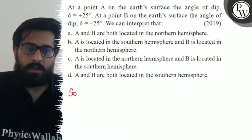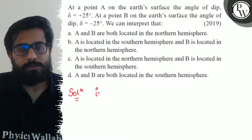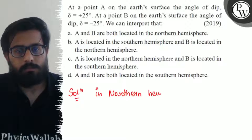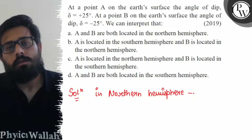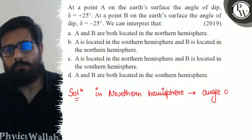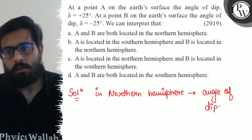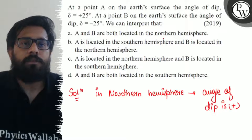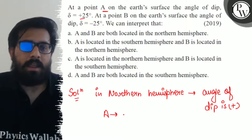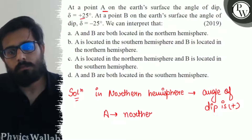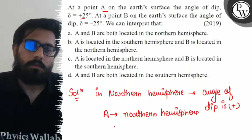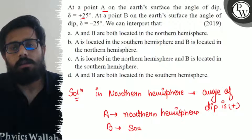We know the relation that in the Northern Hemisphere, the angle of dip is positive. So if at point A the dip is positive, then we can interpret that A is in the Northern Hemisphere. And in the Southern Hemisphere, the dip is negative. So B is in the Southern Hemisphere.